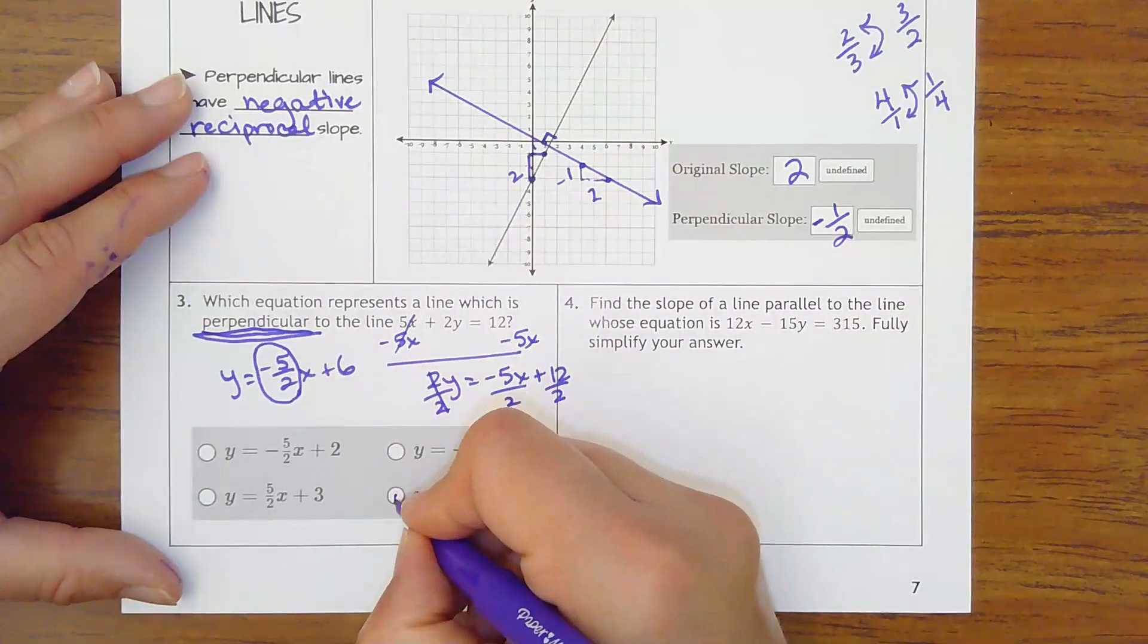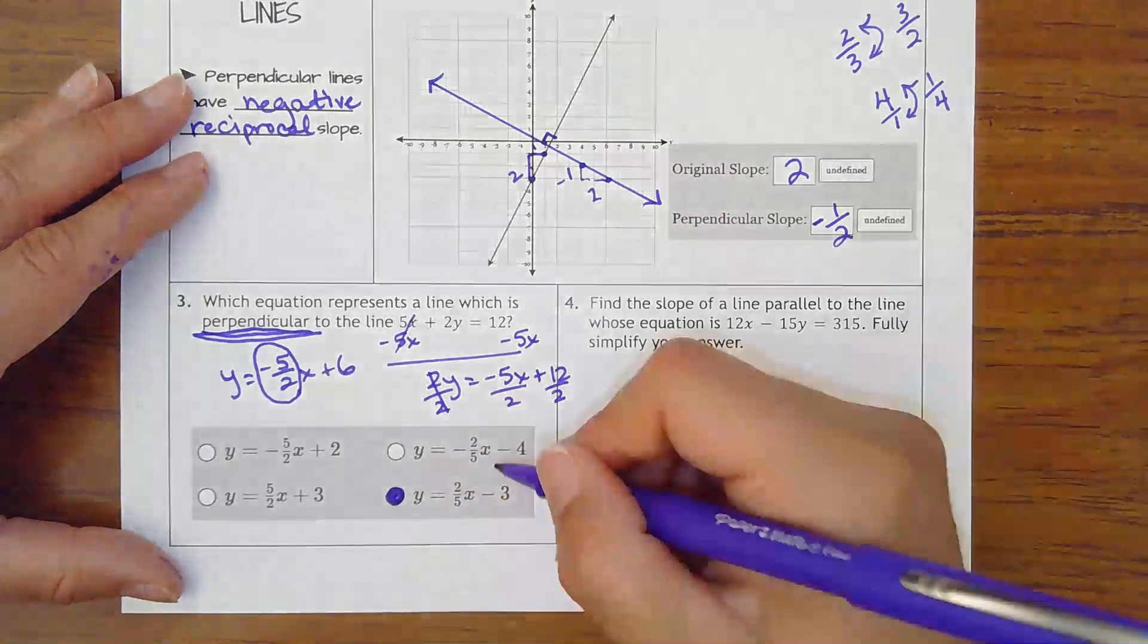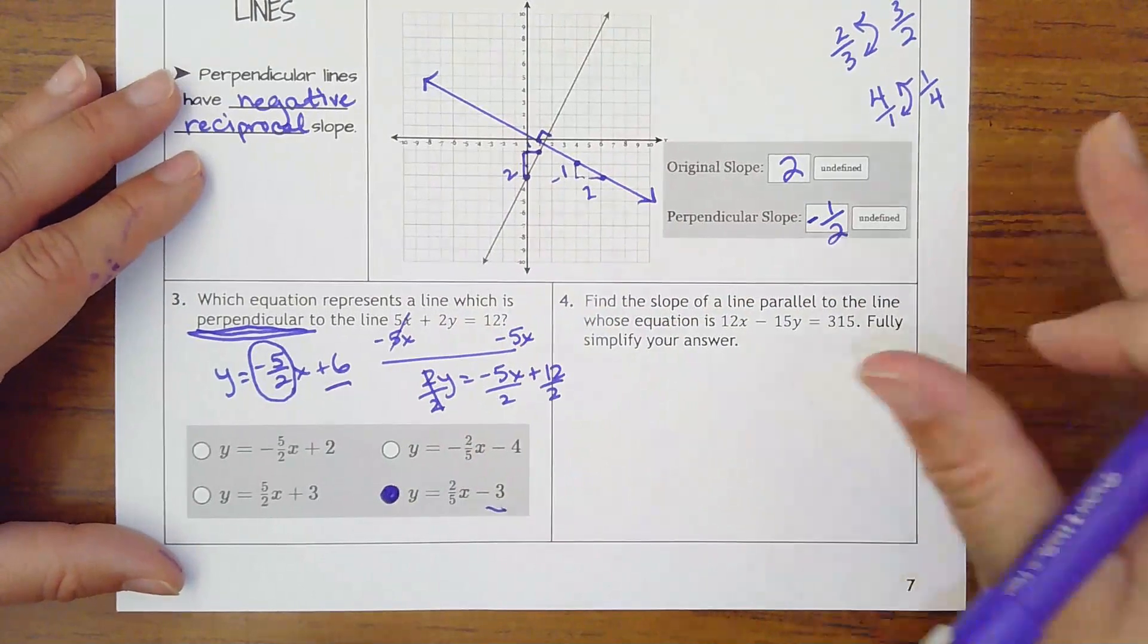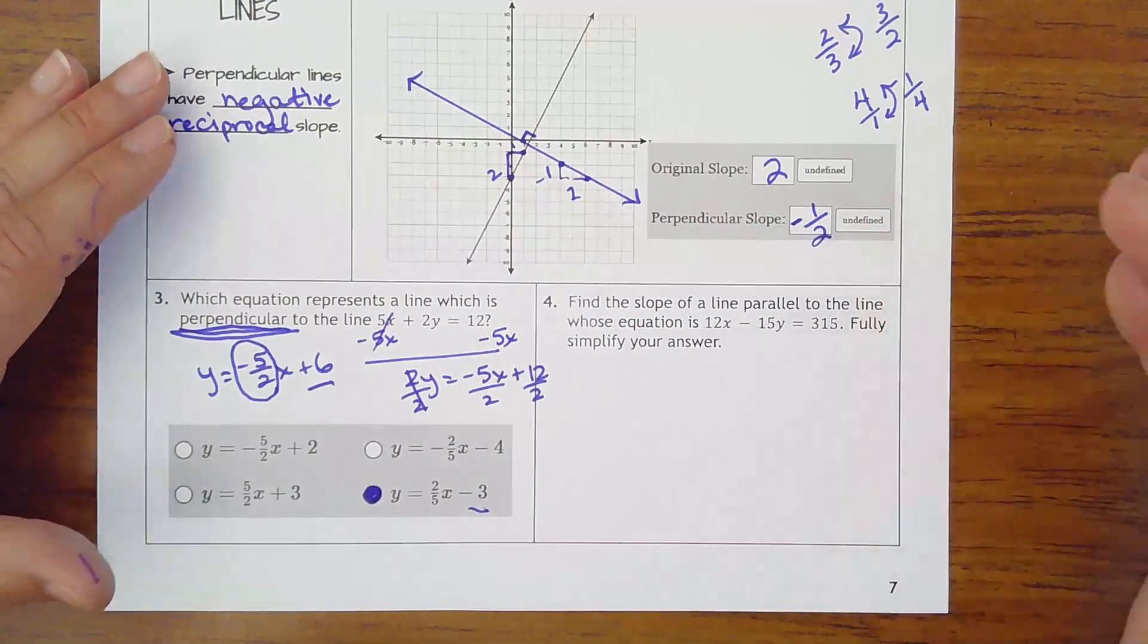So I'm looking for the line that has a 2 fifths x. I don't care anything about the y-intercept. That means no difference in parallel perpendicular. All right, number 4.